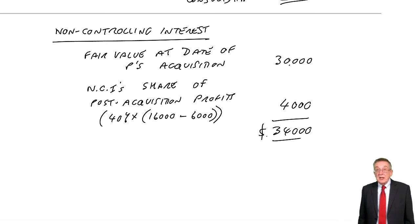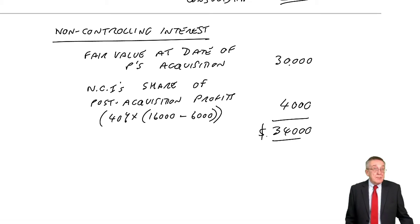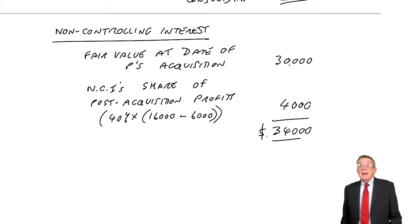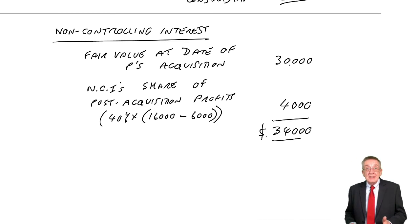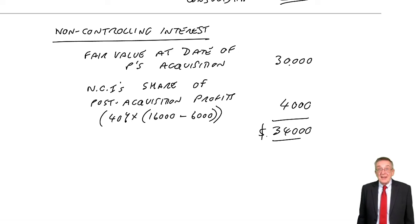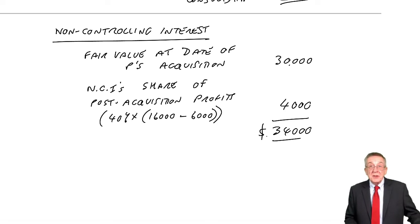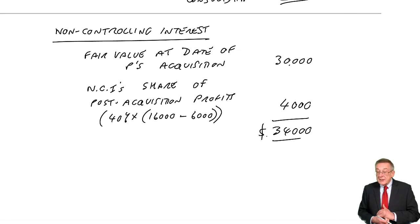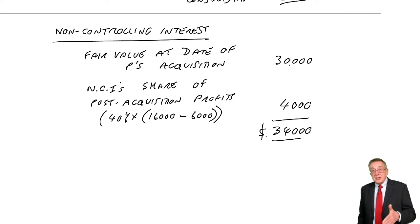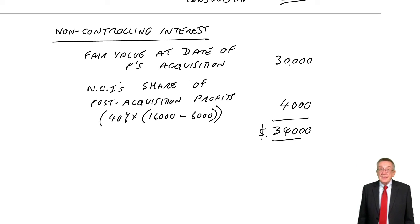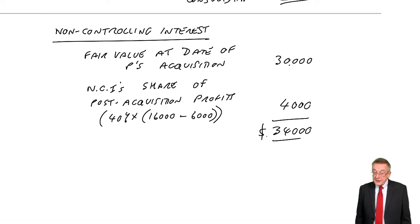So there's our second bit of workings, and note that in the exam there are only multiple choice questions. Any one bit of this can be asked — two marks for the non-controlling interest, or two marks for the goodwill, and so on. The non-controlling interest is always: the fair value at the date of acquisition, plus the non-controlling interest's share of the post-acquisition profits.